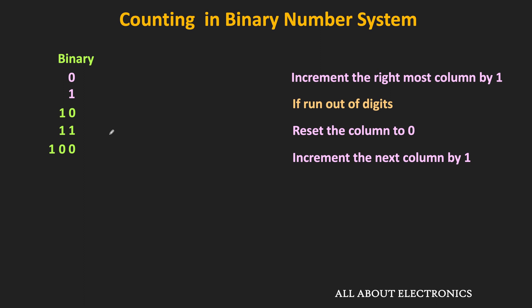After 100, we increment the rightmost column by 1, and all remaining columns carry forward as they are, giving us 101. After 101, the rightmost column runs out of digits again, so we reset it to 0 and increment the next column by 1, keeping all remaining columns as they are. That means the next number is 110. Incrementing the rightmost column by 1 again gives us 111.